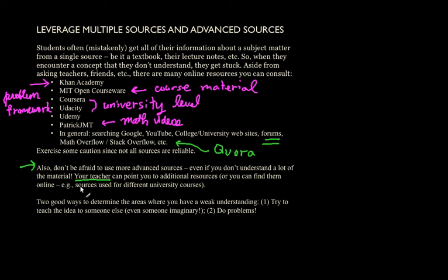To summarize: first, don't limit your learning to a narrow set of sources — seek out additional sources, especially for areas that don't make sense to you. In this day and age with the internet, there are so many good sources available, they're freely available for the most part. Second, consider using more advanced sources even if you can't understand them 100% — they're great ways to build your foundation. And finally, there are good ways to determine what to focus on: try to teach the material to somebody else, and do problems if it's relevant to the field, like math, computer science, or physics. I hope that was useful and I look forward to seeing you in future videos.